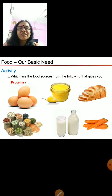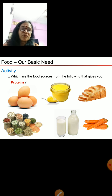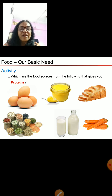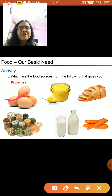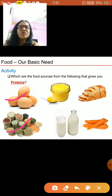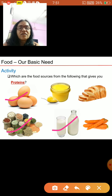We will do one more activity. You have to identify which food sources give you proteins from the pictures shown: eggs, ghee, bread, carrot, milk, and pulses. Eggs give you protein. Pulses also give you proteins. Milk also gives you proteins. So these three food sources out of the options give you proteins.